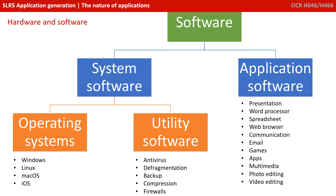We're going to be looking at this in more detail in a later video. But briefly, just as an overview, operating systems are things such as Windows, Linux, iOS or Android. Utility software includes things like antivirus programs, defragmentation, programs that do backup, compression and firewalls.